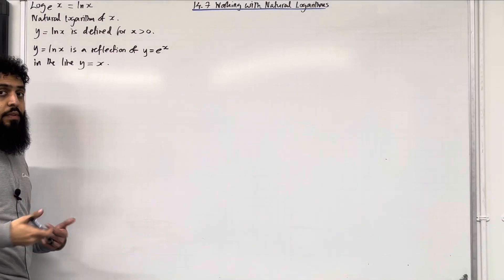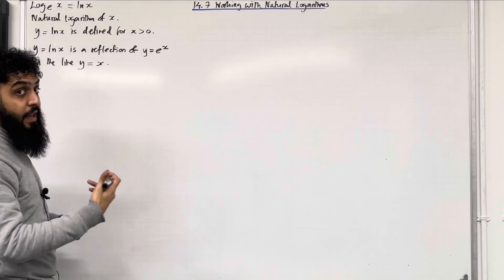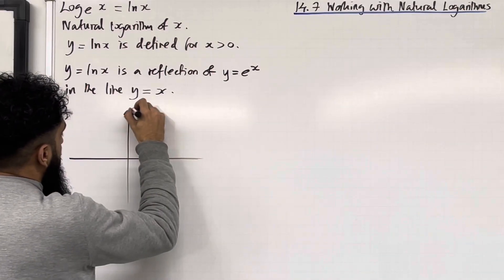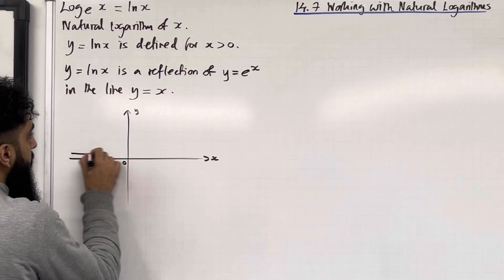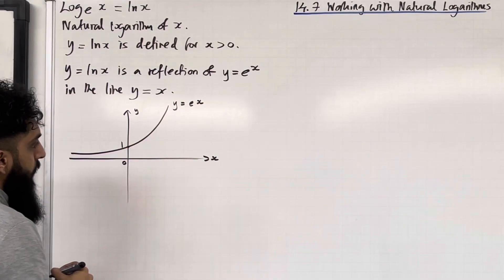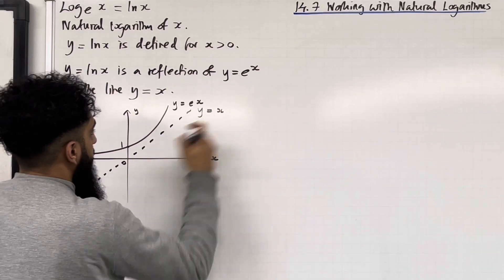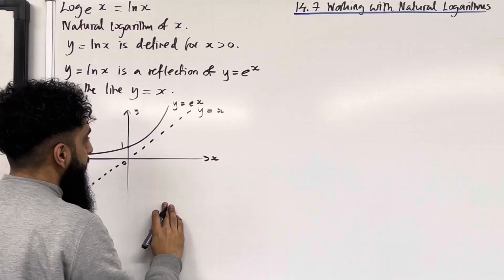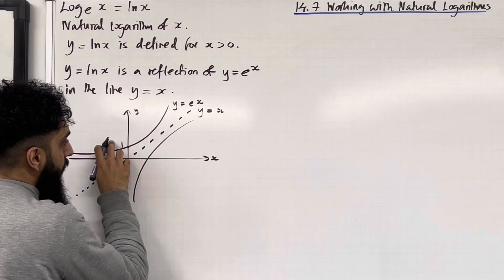I'm going to sketch the graph of y = ln x, starting off with y = e^x and then reflecting that in the line y = x. Here is my coordinate grid with the y-axis, x-axis, and origin. y = e^x looks something like this, with a y-intercept of 1. The line y = x is drawn, and reflecting y = e^x in that line gives a graph where the y-intercept 1 becomes an x-intercept.